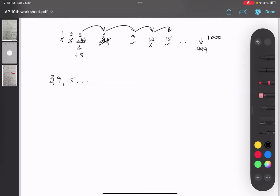999, this is odd also and divisible by 3 also. Make sense? So my last number is 999.